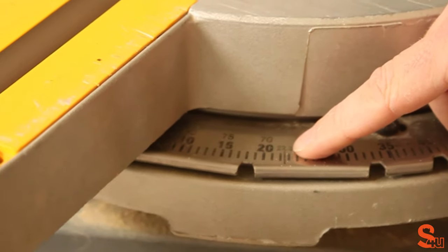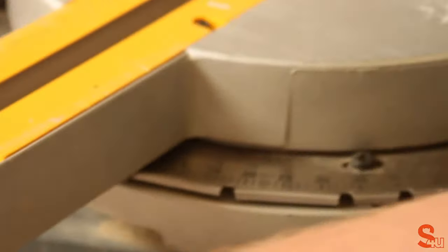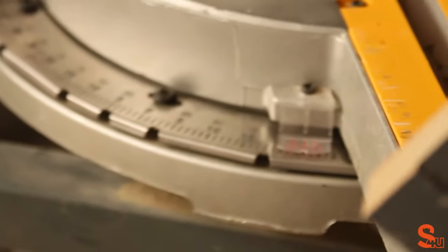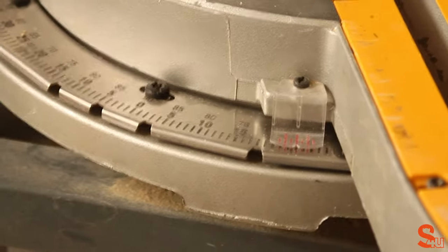Now we need to change the mitre saw to the opposite 22.5 degrees and make that cut on the other piece of skirting board.